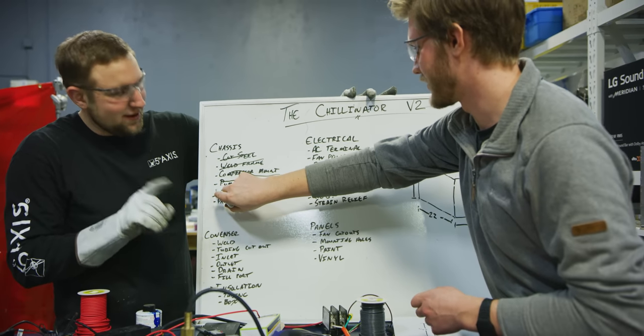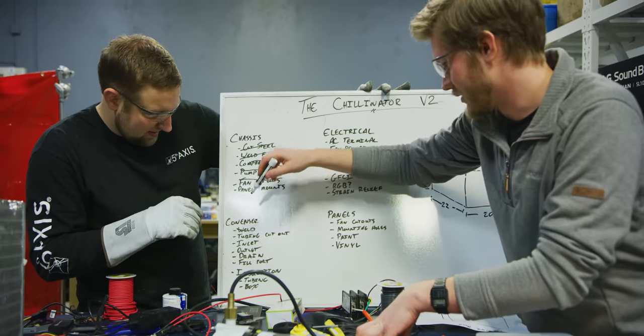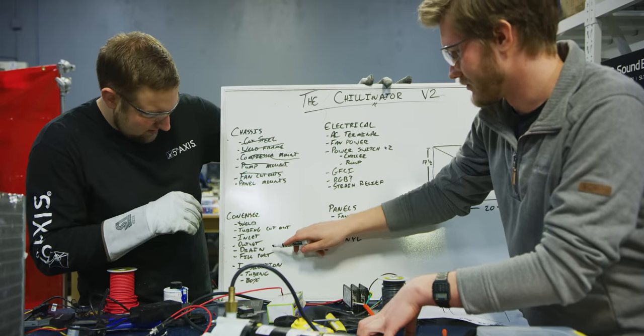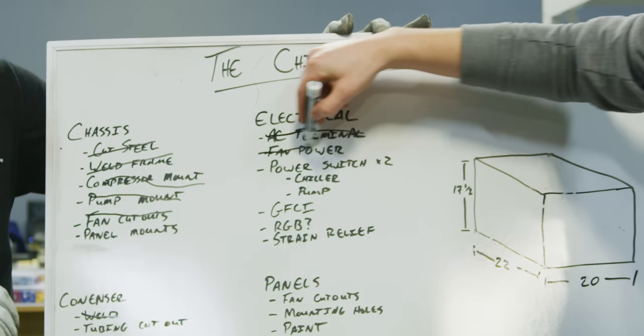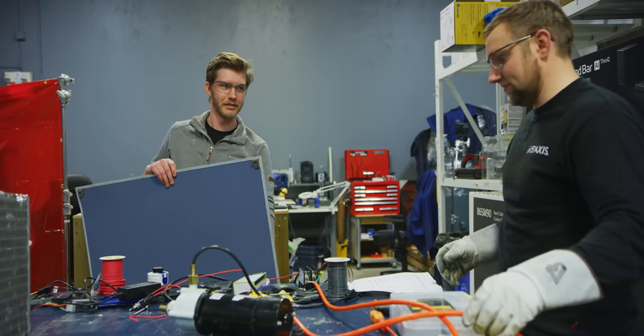Pump mount. Yup. Fan cut out. Almost there. Done. Panel. Weld is done. Tubing. Okay. RGB. Definitely. It's 5:30. Okay. We're supposed to go home now.